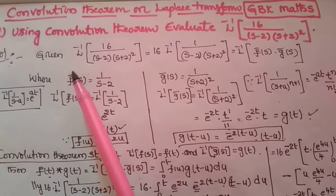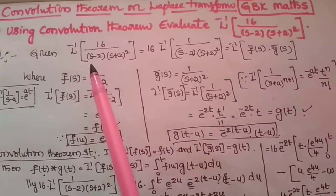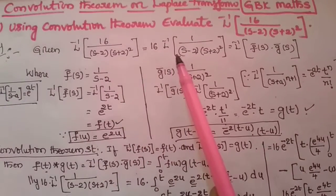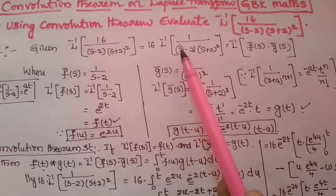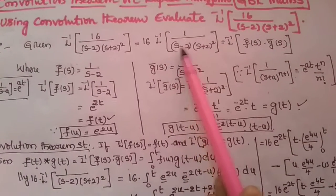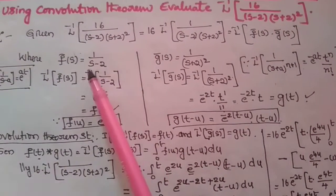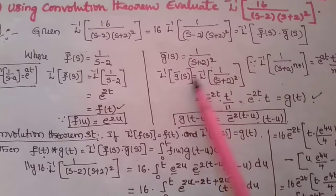Let us consider the given problem: L inverse of 16 by s minus 2 into s plus 2 whole square. So, 16 is the constant. That is why I have written here. So, whatever problem given, it can be written as L inverse of f bar of s into g bar of s. Then identify f bar of s and g bar of s for getting f of t and g of t.